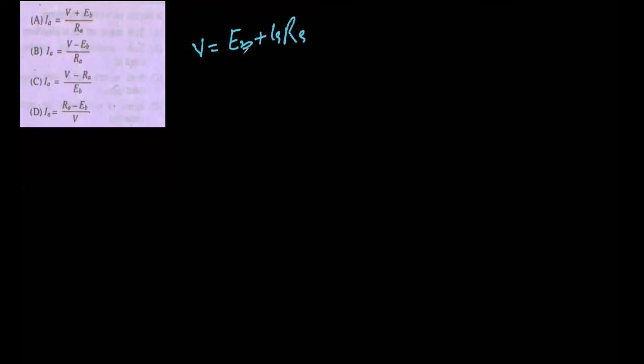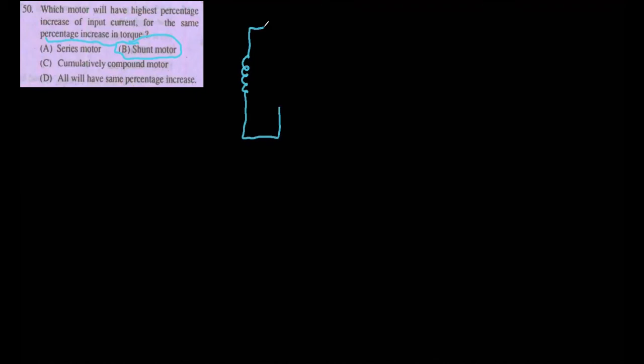The next MCQ is: the armature current of a DC motor is given by — we need to find IA. For a motor, the equation is V = EB + IA × RA, so armature current IA = (V − EB) / RA. Option B is the correct answer. The next MCQ asks which motor will have the highest percentage increase of input current for the same percentage increase in torque.